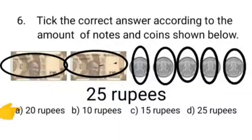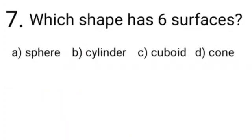Our given options are, option A is 20 rupees, which is not correct. Option B is 10 rupees, which is not correct. Option C is 15 rupees, which is not correct. And option D is 25 rupees, which is correct. So we will put tick on option D. Our correct option is D.